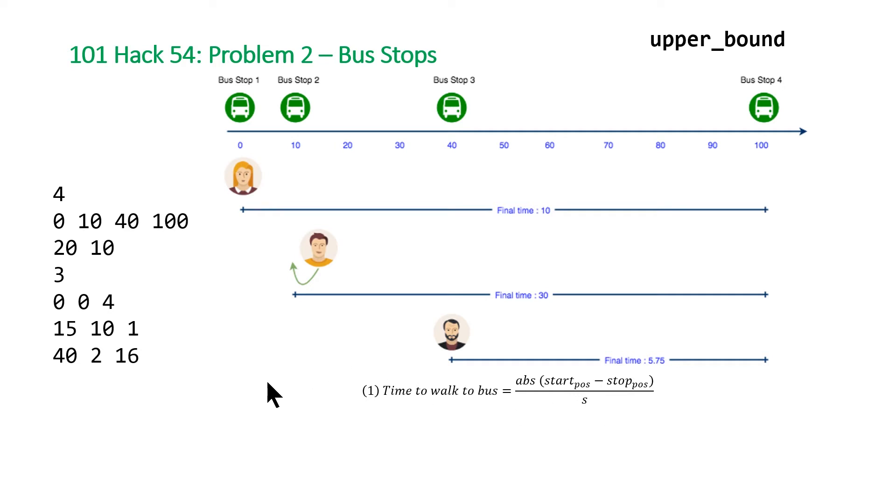The second thing we need to calculate is the trickiest of the three. This is the time waiting for the bus at that bus stop. We'll look at this closer when we look at the code, but basically we just need to calculate which bus number we're going to be able to catch.